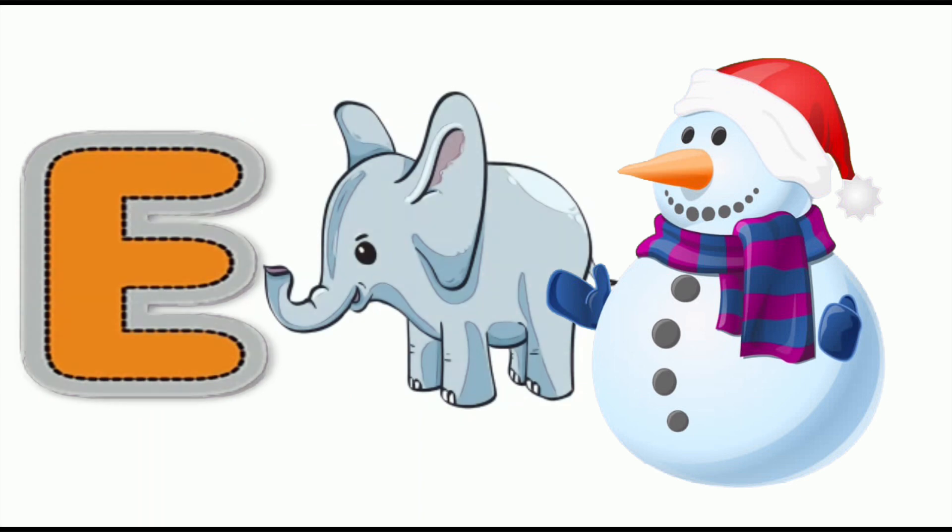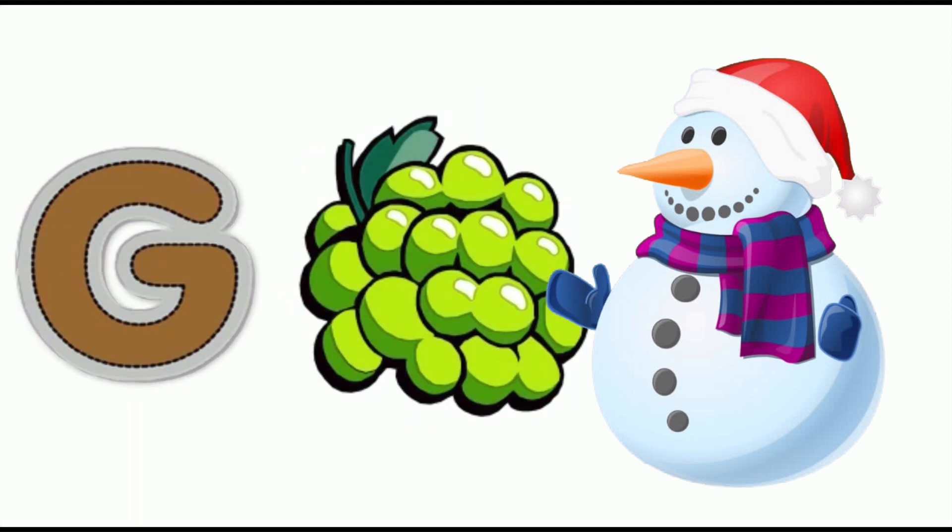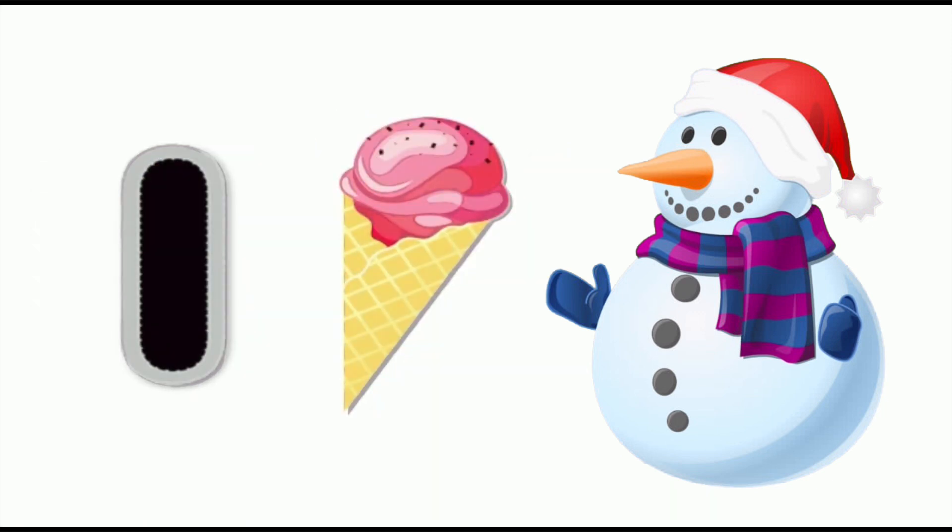E for elephant, elephant, elephant. F for frog, frog, frog. G for grapes, grapes, grapes. H for hen, hen, hen.